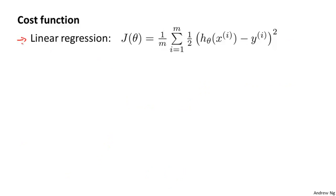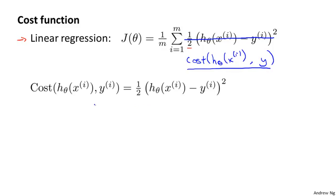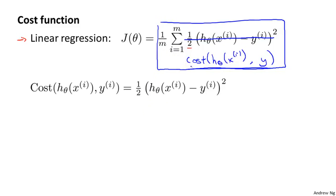Back when we were developing the linear regression model, we used the following cost function. I've written this slightly differently, where instead of 1 over 2m, I've taken the 1/2 and put it inside the summation. I want to use an alternative way of writing this cost function — instead of the squared error term, let's write cost of h(x), y, and define that to be equal to 1/2 of the squared error.